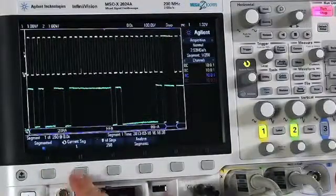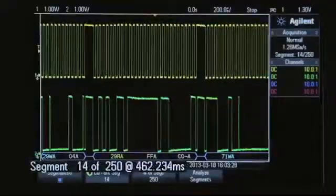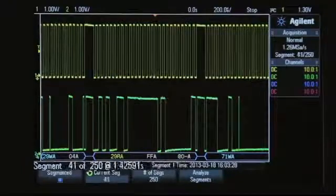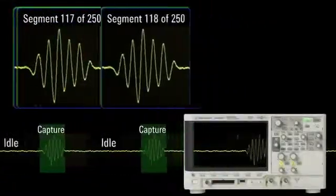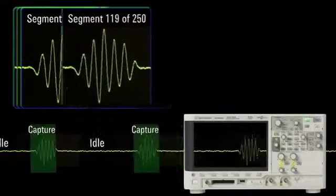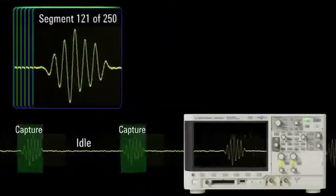Once completed, you can tap the Current Segment key and then turn the Entry knob to review all of our captured segments. Segmented memory optimizes oscilloscope acquisition memory by only capturing important segments of a waveform, based on the trigger conditions and time-based settings of the user.